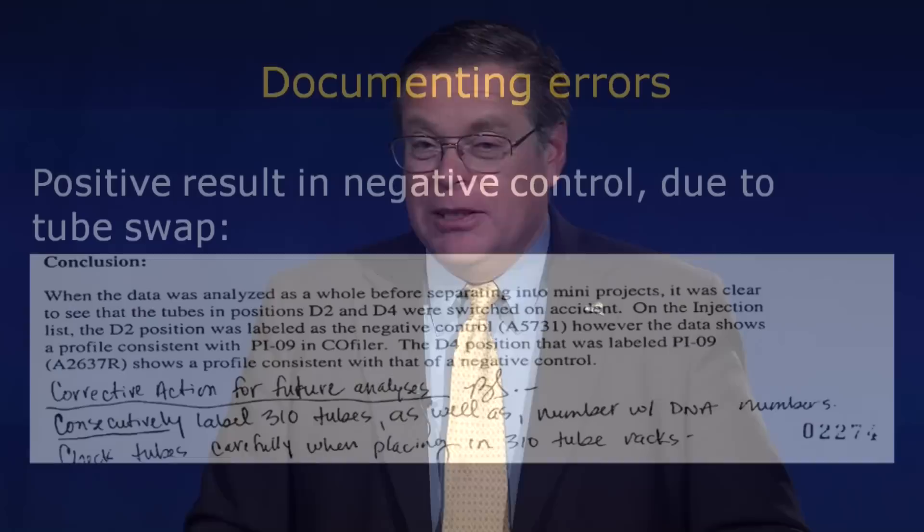The swap of those tubes was recognized because the result was unexpected. But consider if this could have happened with an evidence sample and a reference sample from a suspect. If you found a suspect's DNA profile in what you thought was an evidence sample, many investigators would decide that was not unexpected — because that's why the individual was being investigated.